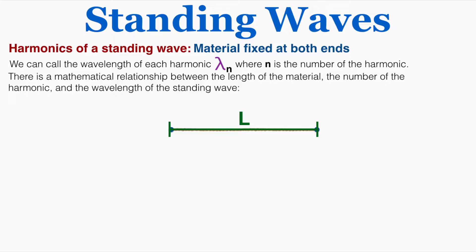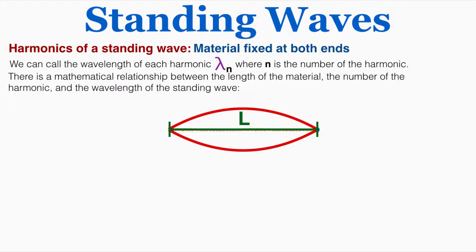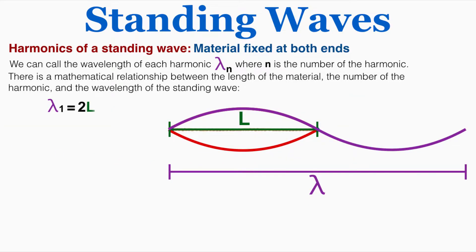Now let's find some patterns in the harmonics of this material. We can call the wavelength of each harmonic lambda-n, where n is the number of the harmonic. There's a mathematical relationship between the length of the material, the harmonic number, and the wavelength of the standing wave. In a material of length L, for the first harmonic, the full wavelength of the wave equals 2L — two times the length of the material. So the wavelength of the first harmonic is equal to 2 times the length of the material.